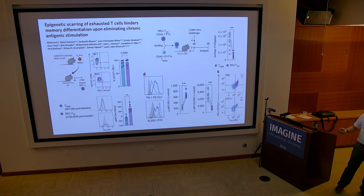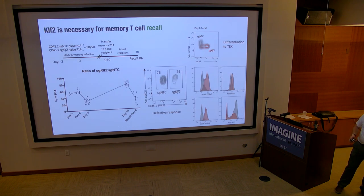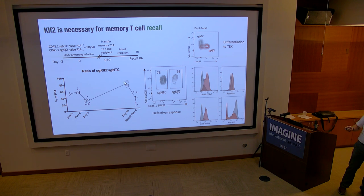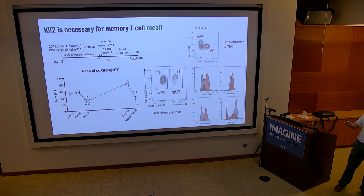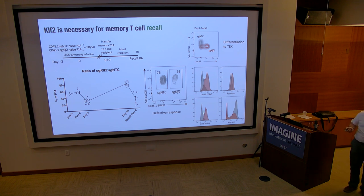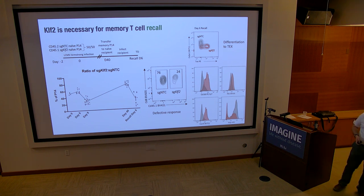We asked the same kind of question: what happens if we take our memory KLF2 knockout cells and rechallenge them? These cells do incredibly poorly — they go in at 80-20 in favor of KLF2 knockouts and come out about 80-20 against the KLF2 knockouts. We think that's because they differentiate again into an exhausted-like state: upregulating Tox, CD160, PD-1, not getting KLRG1, and upregulating CCR6. Their inability to resist differentiation into the exhausted state is what's hindering their ability to be good effector cells.